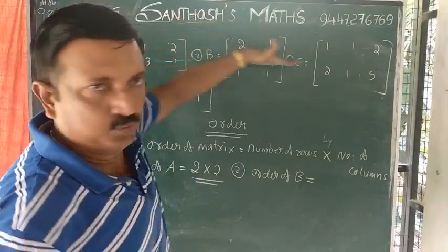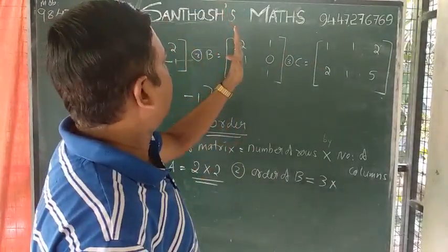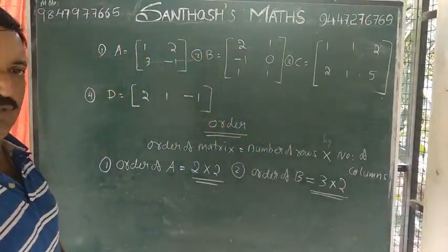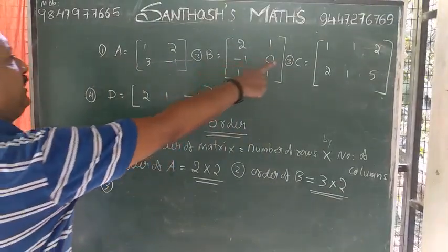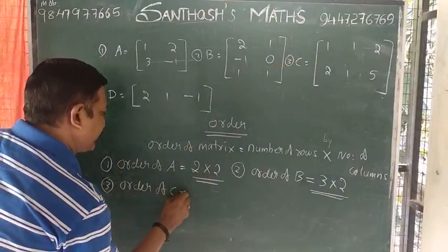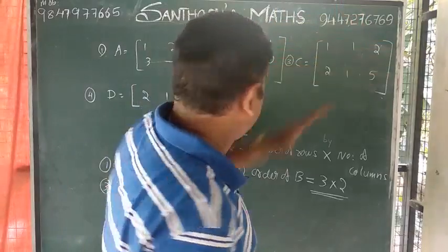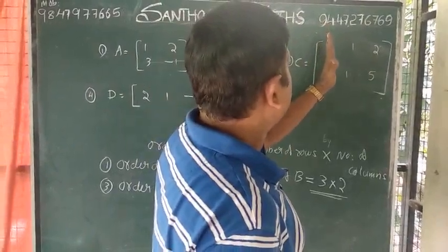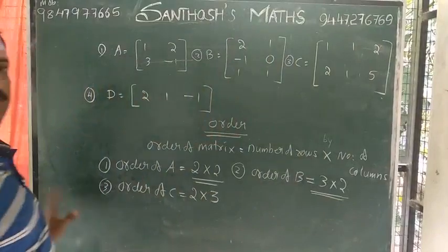Order of B: it has 3 rows by 2 columns — 3 by 2 order matrix. Order of C: it has 2 rows by 3 columns — 2 by 3 order matrix.